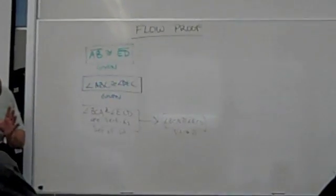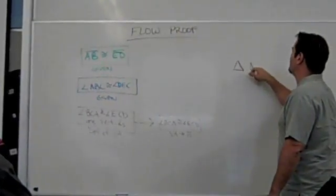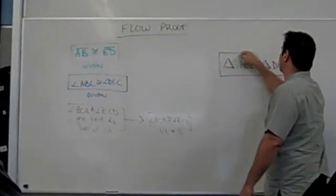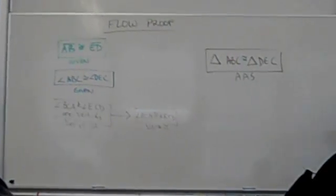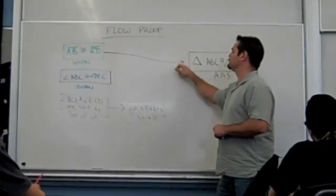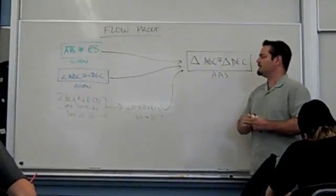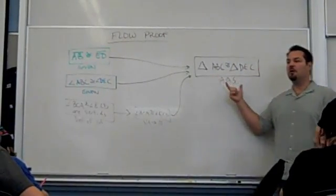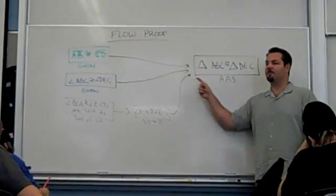It's only a different way of demonstrating the same information. Now for this last step — what things contribute directly to the statement that the triangles are congruent? Three pieces are required: this is required, this is required, and this is required. Does the vertical angles step contribute directly or indirectly? Indirectly — it goes via that information to get there. If we're trying to prove triangles congruent, how many pieces are required? Three. So how many input arrows should you have for that box? Three.